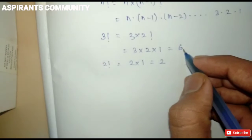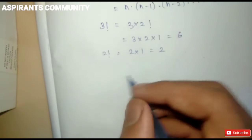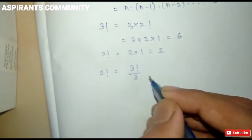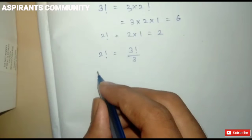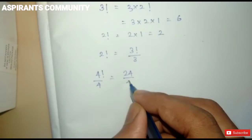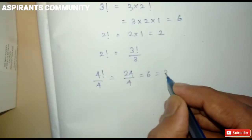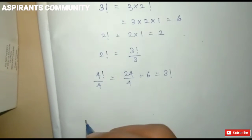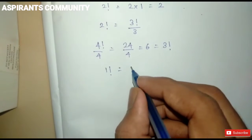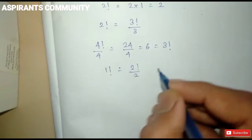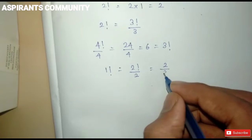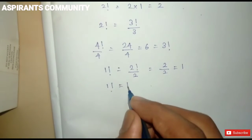If we divide 3 factorial by 3 we can express 2 factorial. So 3 factorial divided by 3 gives 2 factorial. Similarly, 4 factorial divided by 4: 4 factorial is 24, and 24 divided by 4 is 6, which is 3 factorial. Now, 1 factorial can be expressed as 2 factorial divided by 2. Since 2 factorial equals 2, then 2 divided by 2 equals 1, so 1 factorial equals 1.